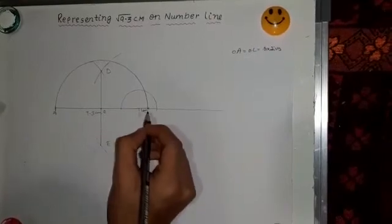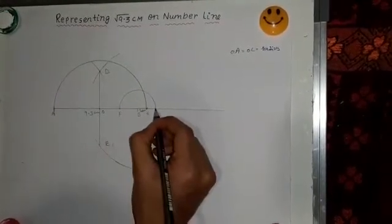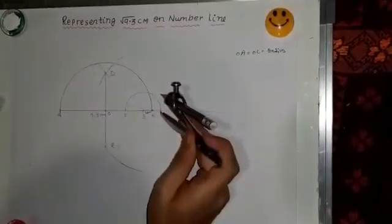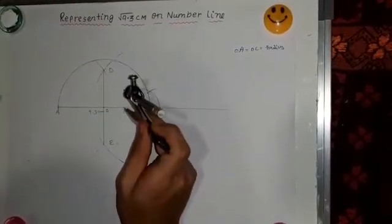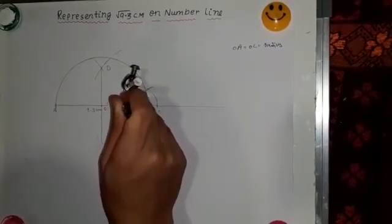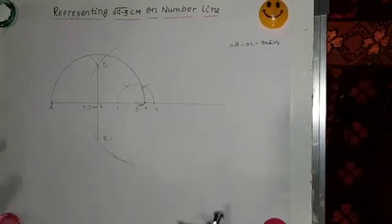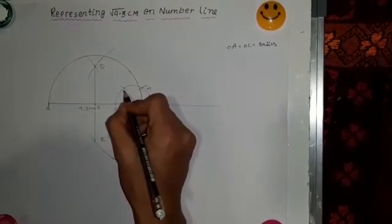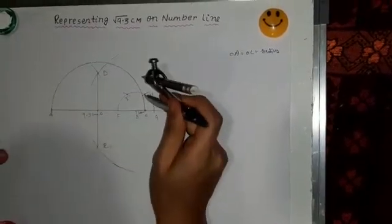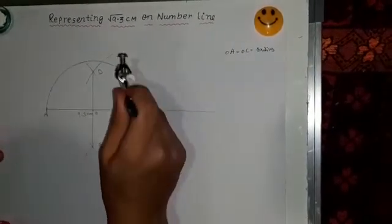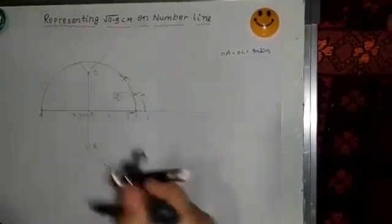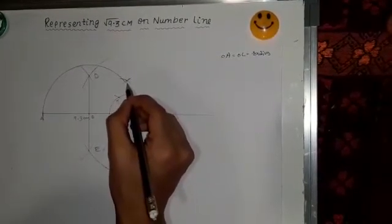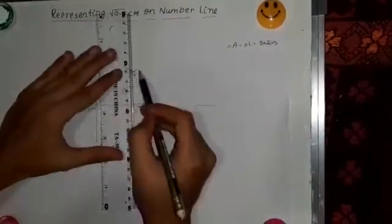Now this will intersect at two points name it F, G. Now taking G as a center cut an arc. Then taking F as a center cut another arc or you can just take that same arc from here and cut this arc. Your wish. So name it H and I. Now taking H and I, H as a center cut an arc and then I as a center cut another arc. So name this point at the intersection P. Now join BP, B to P.